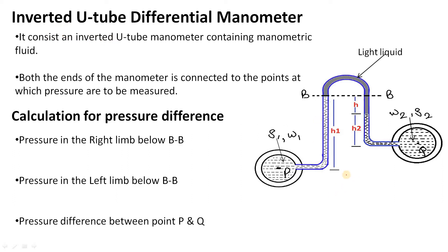This is our figure of the inverted U-tube differential manometer. Differential manometers are used for measuring the pressure difference between two points. Here one point is P and the second point is Q, whose pressure difference we have to measure. We use an inverted U-tube whenever we require accuracy and whenever we have to measure low pressure with accuracy.